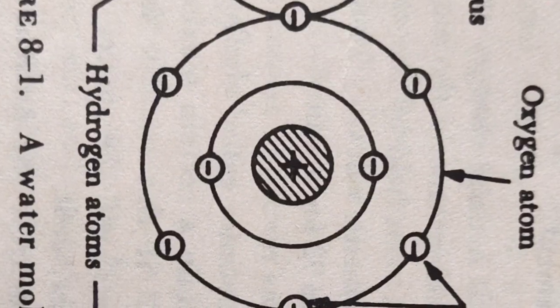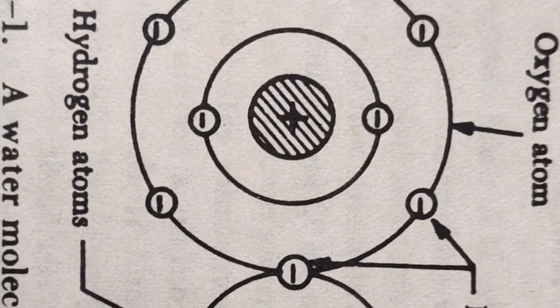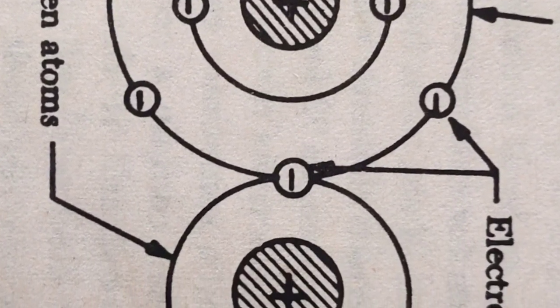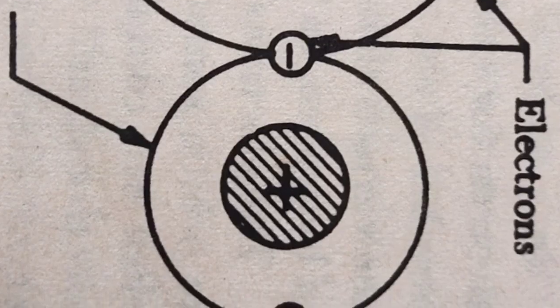The molecule of water is illustrated in this figure. It would no longer retain the characteristics of water if it were composed of one atom of hydrogen and two atoms of oxygen.